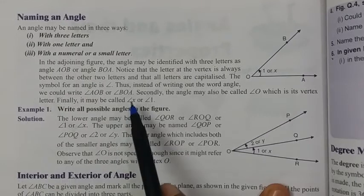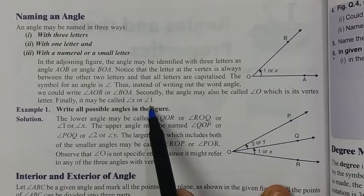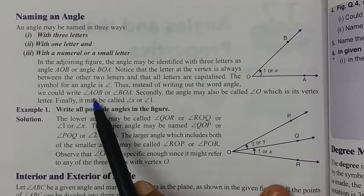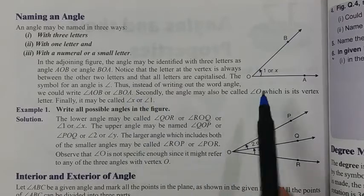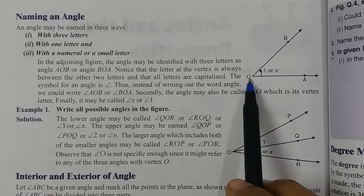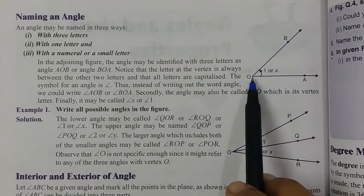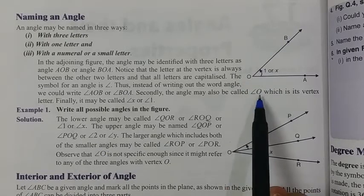The symbol of an angle is this. It can be written as angle X or angle 1. Same way, we can indicate angle AOB or angle BOE. Otherwise, if we want, we can indicate it with just the single letter, angle O. But with a single letter, we can only represent the vertex O — angle A or angle B cannot be represented this way.